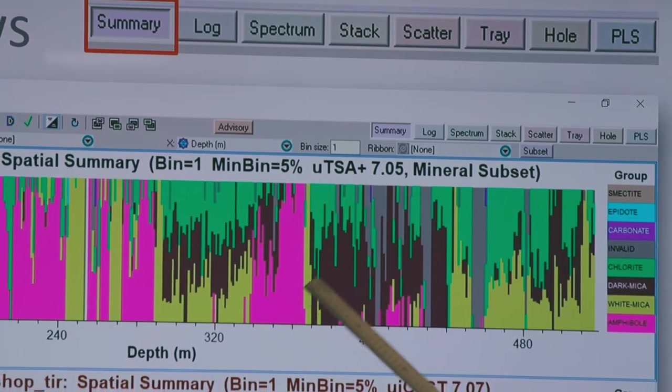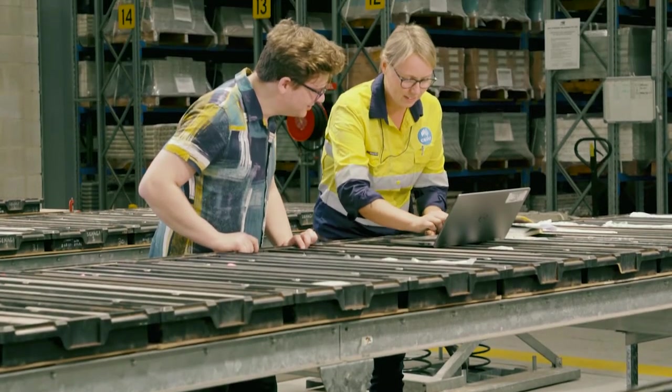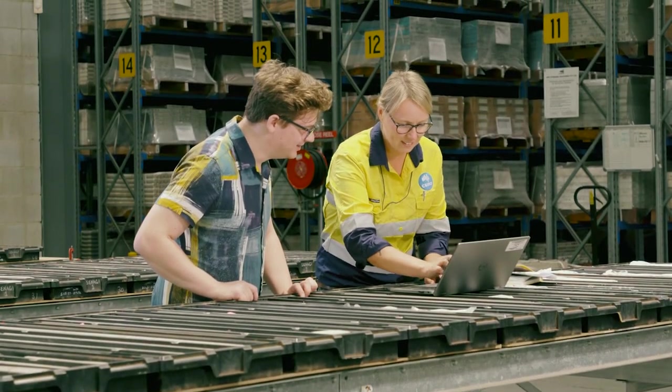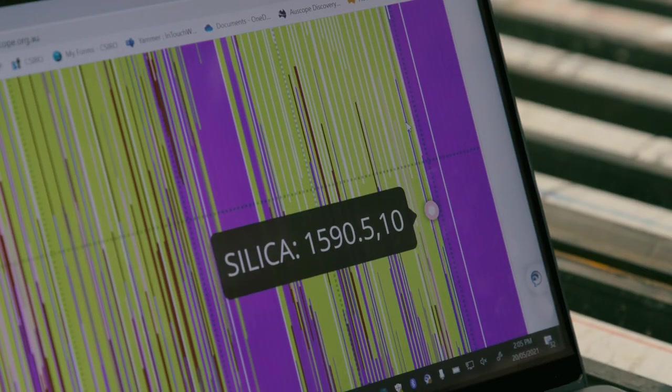A number of geological surveys from around the world have approached CSIRO and AuScope, and their intention is to build NVCL systems of their own to deliver geological data and drill core data in the same way that we've been able to do to the Australian community.